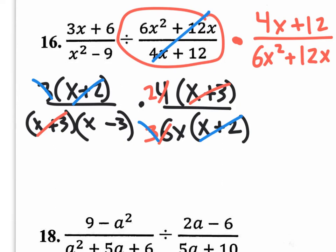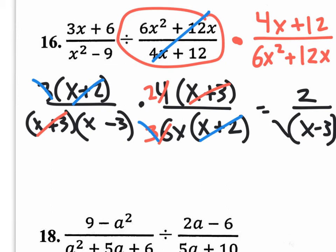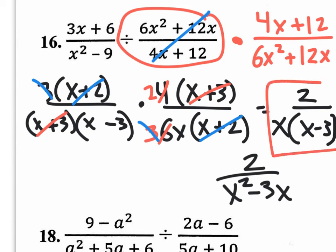So what do we have left? Up on top, the only thing left is a 2. On the bottom, we have the binomial x minus 3, but we also have this little x that's all by itself now. So let's write down that x on the outside. And that's your final factored form answer. Another acceptable answer is the distributed form, but I would leave it in factored form like this. That's the best answer, in my opinion.